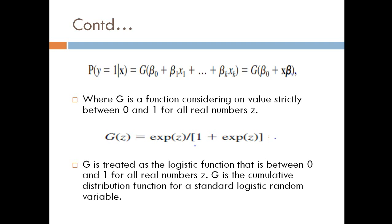The first equation says that P is the probability of Y equal to 1 given X, equal to G of β₀ plus β₁X₁ plus βₖXₖ, which is G into β₀ plus Xβ, where G is a function considering on value strictly between 0 and 1 for all real numbers z.